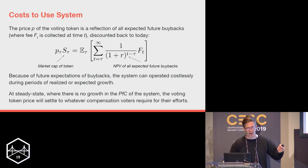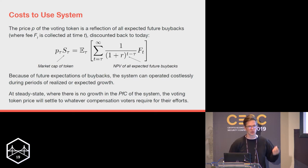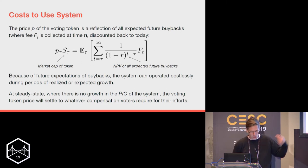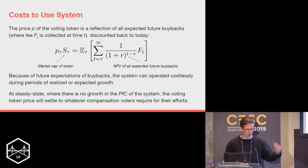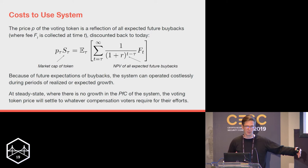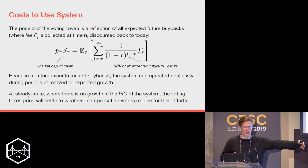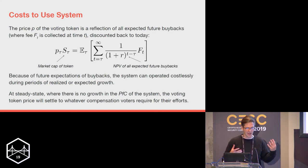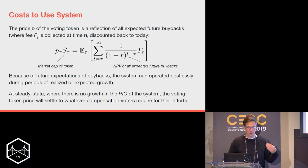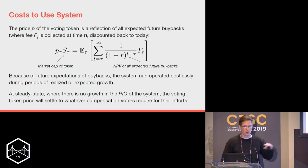If there is an expectation of growth in the future, the voting token today should trade above its floor — meaning we don't need to charge any fees. We can borrow from future expectations of growth to make using the protocol costless in the near term. For example, if today the system secures $25M implying a token floor of $50M, but the market thinks it'll secure $250M in a year, that future expectation pushes the token price above its floor, meaning it's secure and we don't need to charge any fees.